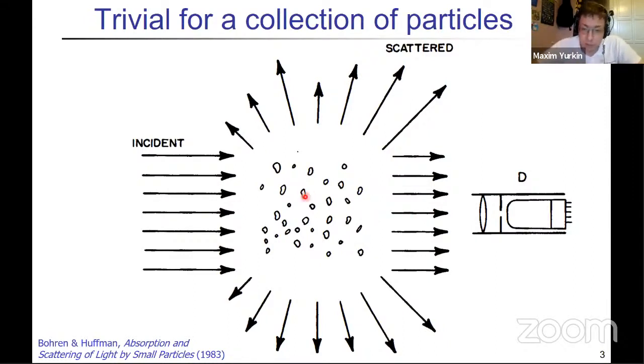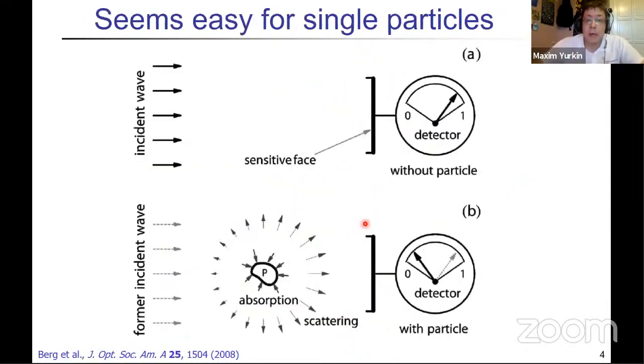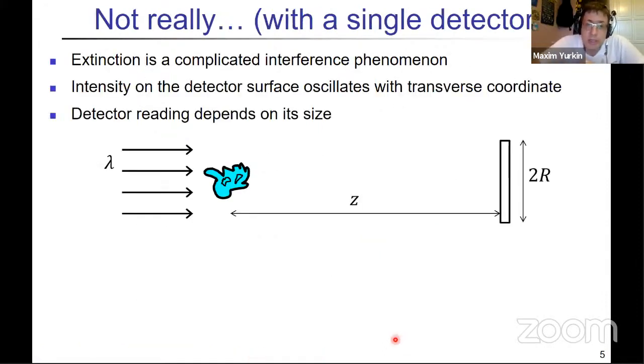It also seems easy that the same can be done for single particles, as shown here in a nice picture from Matthew Berg's article. But it has some issues—it's not really that easy. As I will show further, extinction is a complicated interference phenomenon. When you put a detector here, the intensity of this interference will depend on the transverse coordinate, and that's why the whole detector reading will depend on its size.